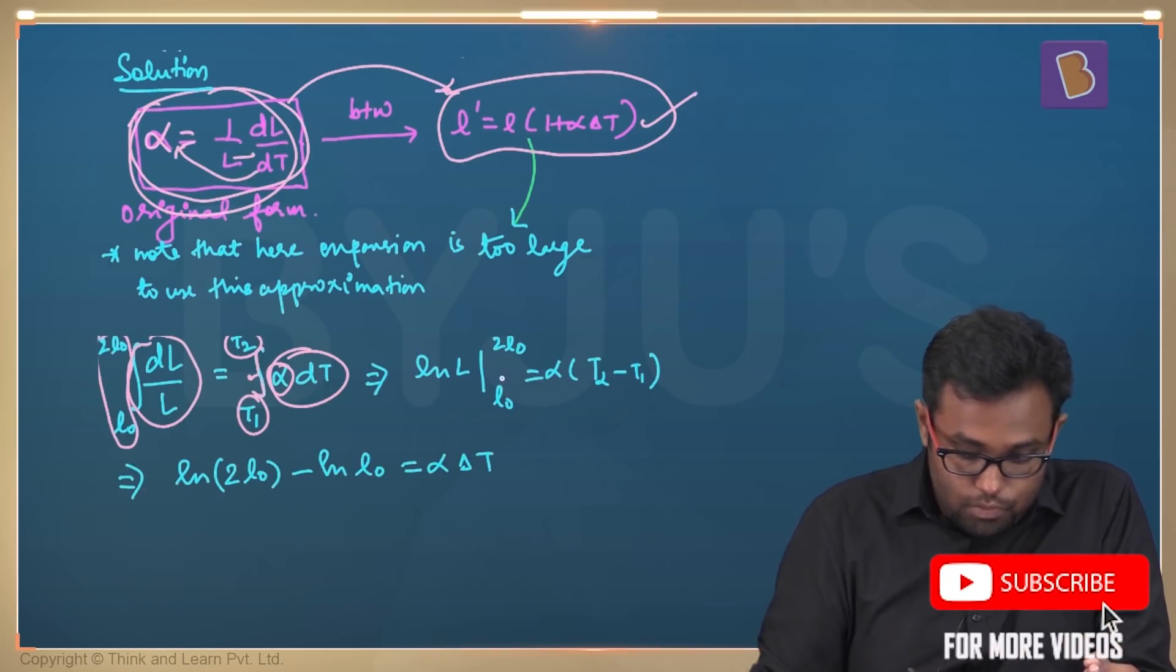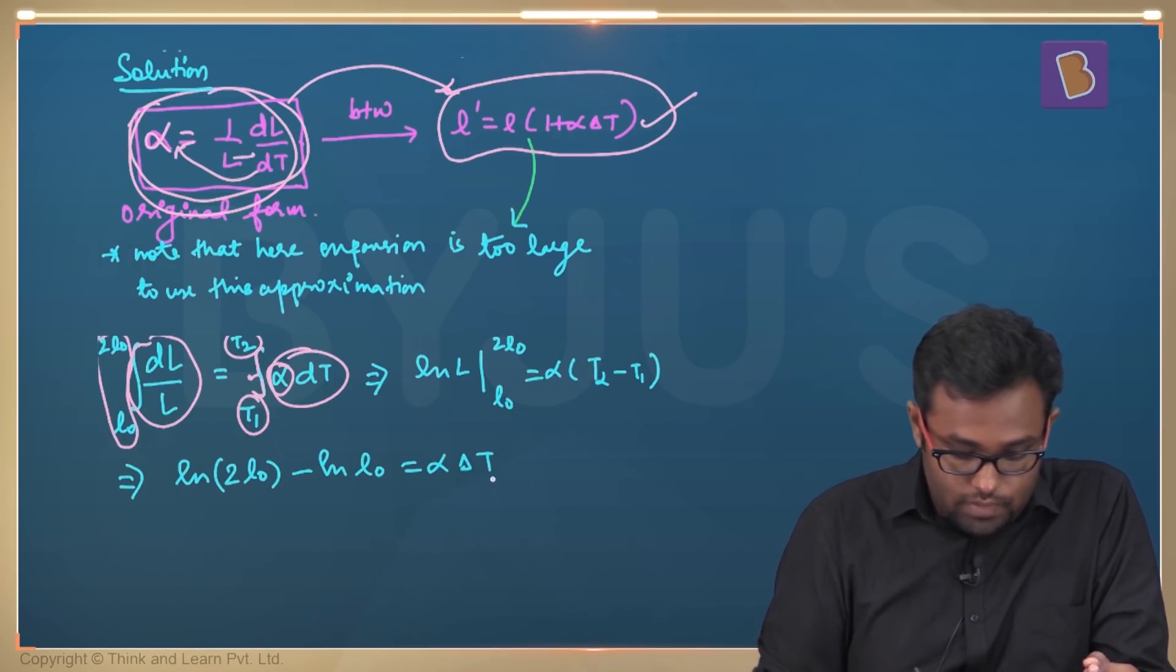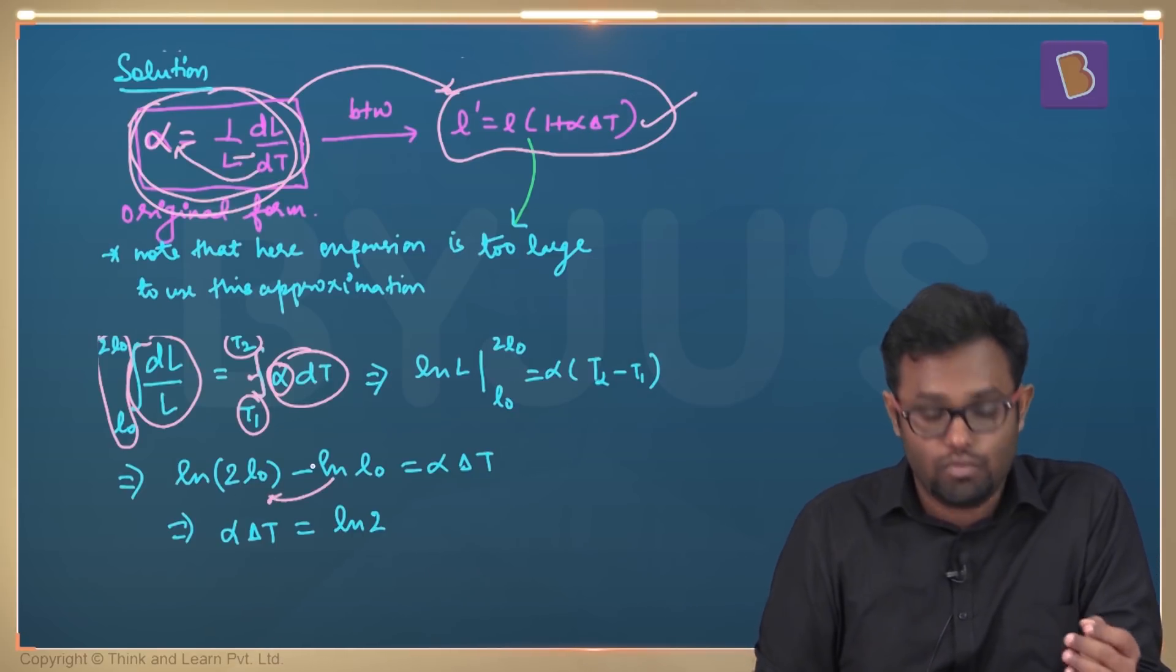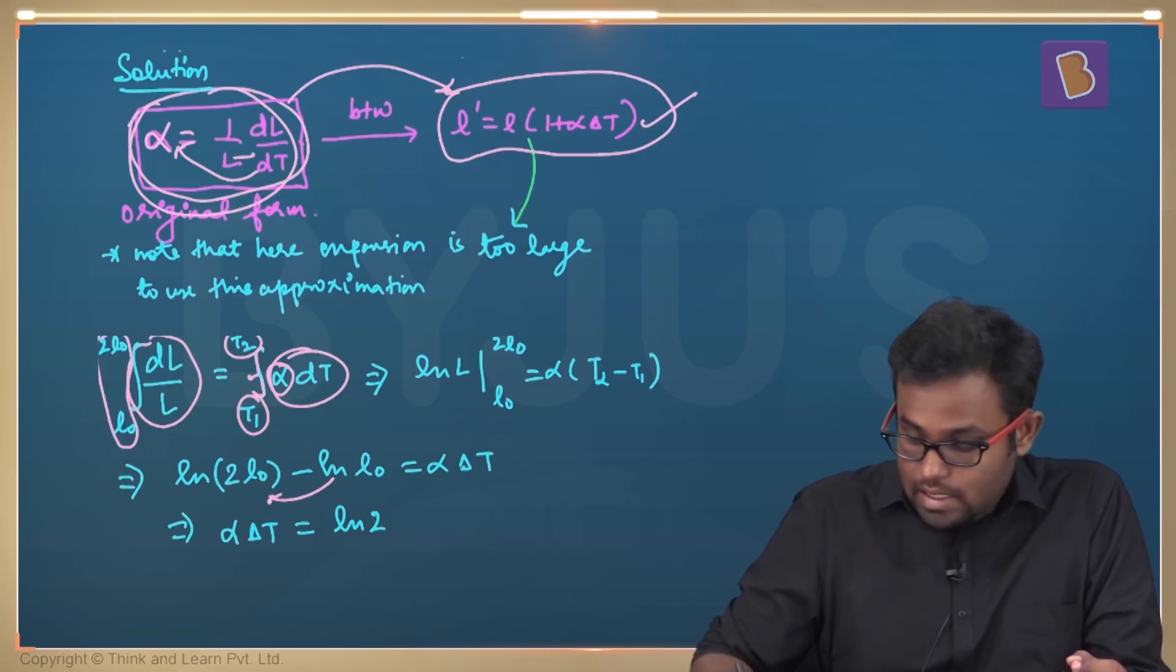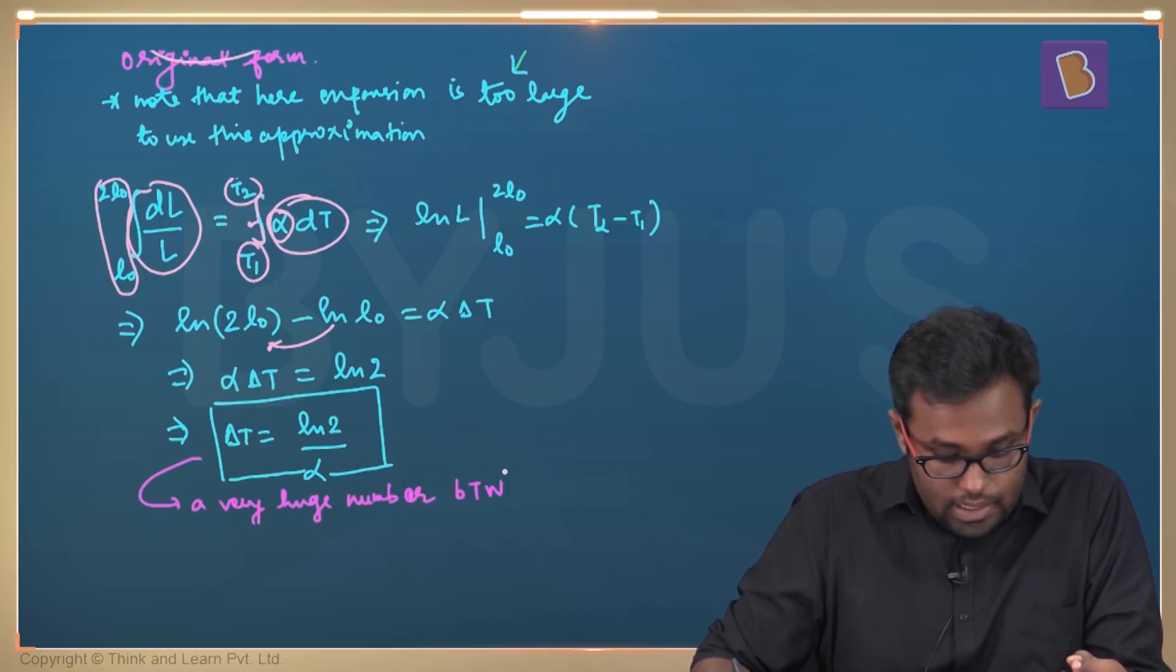If you put the values here, you get LN2L0 minus LNL0 equals alpha delta T. That is alpha delta T equals LN2 because these both will get divided. You have that rule for a log, and delta T becomes equal to LN2 by alpha.